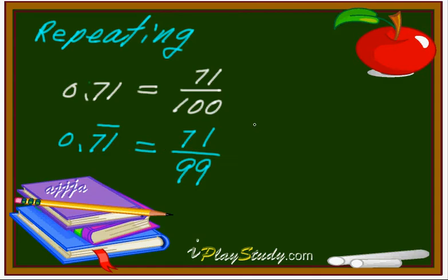That means you can do this one, right? 0.713713713 forever. Then, hey, automatically, just like this.